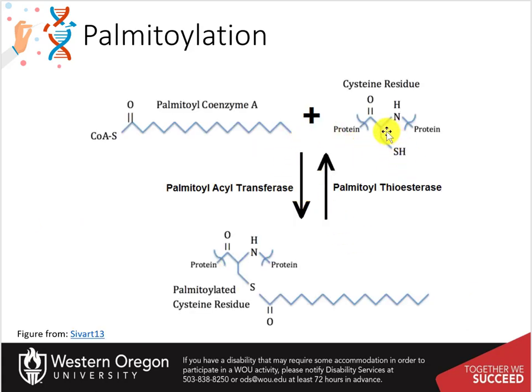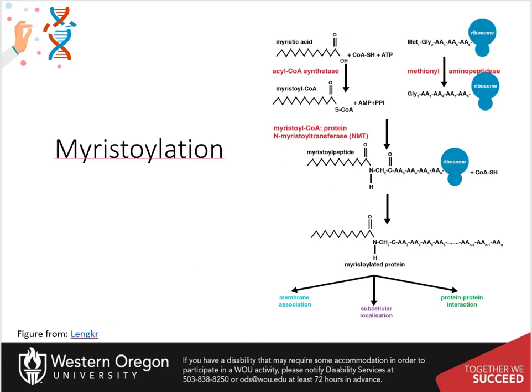Fatty acids can also be incorporated into protein structures, either on the cysteine residues, as is the case in palmitoylation shown here, or using the N-terminal glycine amino group, as in the case of myristoylation shown on the next slide. The myristoylation pathway adds myristic acid to the N-terminal glycine amino group of nascently translated proteins. Since the start codon for proteins is typically methionine, this first residue must be removed by a methionine aminopeptidase prior to myristoylation. The target protein is required to have a glycine in the second amino acid position as a target sequence for this process.